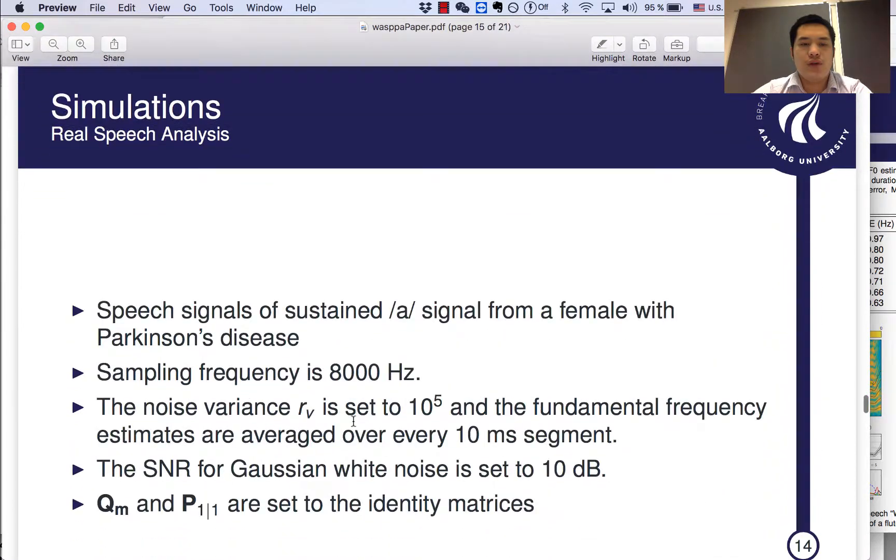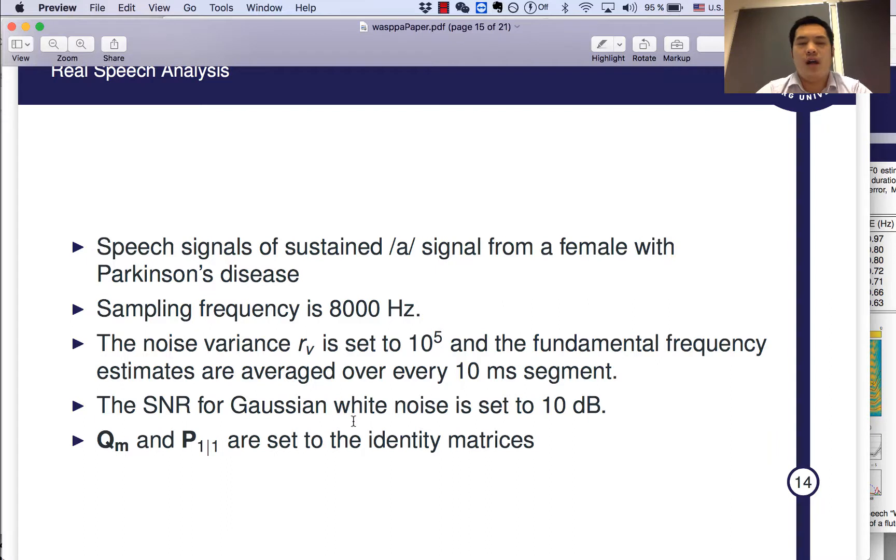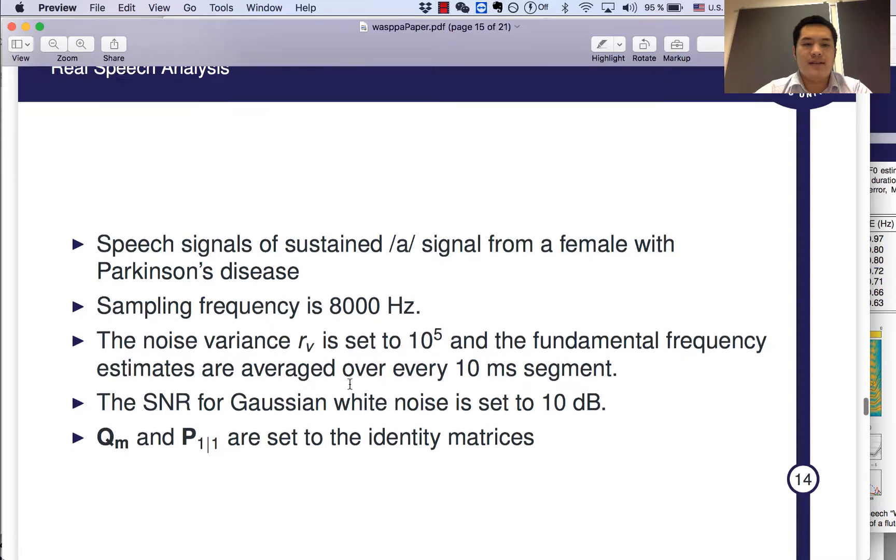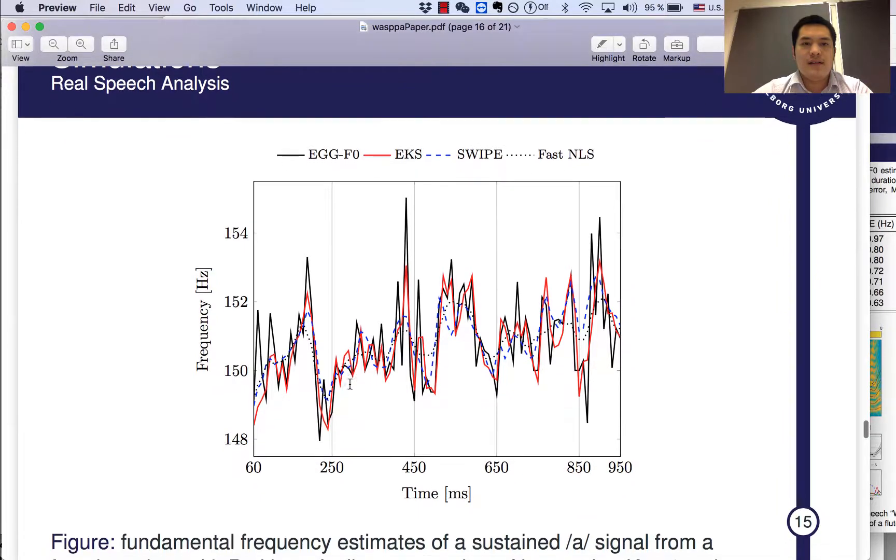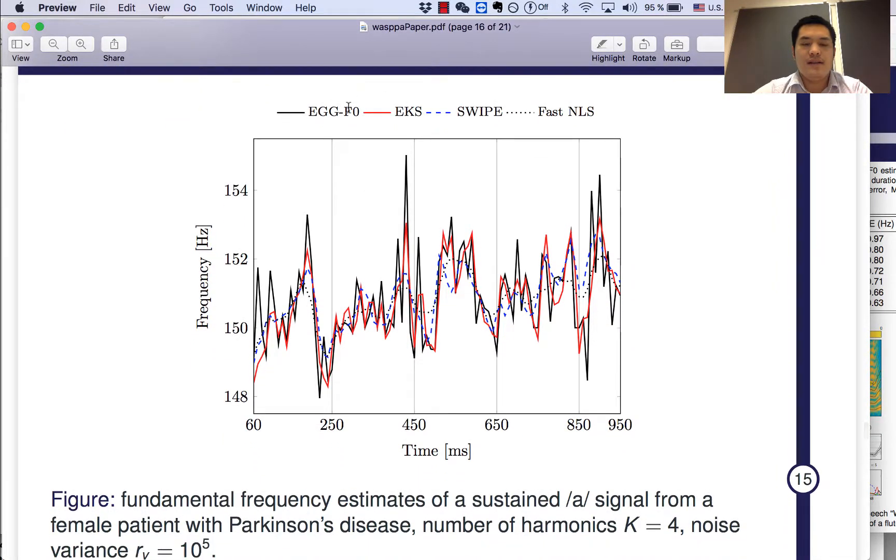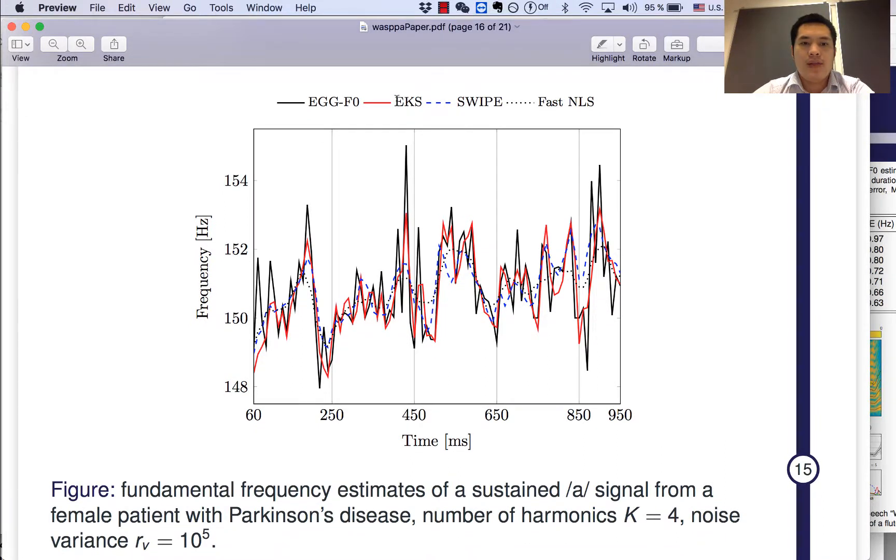We also tested our algorithm for speech signals of sustained vowel signals from a female with Parkinson's disease. The sampling rate is 8000 Hz, noise variance set to this one, and the fundamental frequency averaged over every 10 millisecond segment. As you can see here, this EGG fundamental frequency can be viewed somehow as a baseline for our problem.